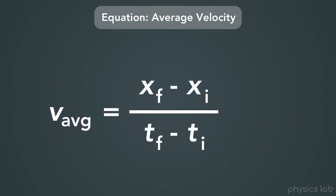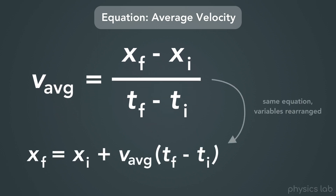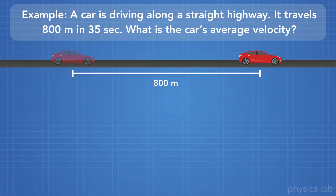One more thing to note is that this equation we just learned is the same thing as this equation — the variables have just been rearranged. Now let's do an example problem to try out this equation. A car is driving along a straight highway and travels 800 meters in 35 seconds. What is the car's average velocity?